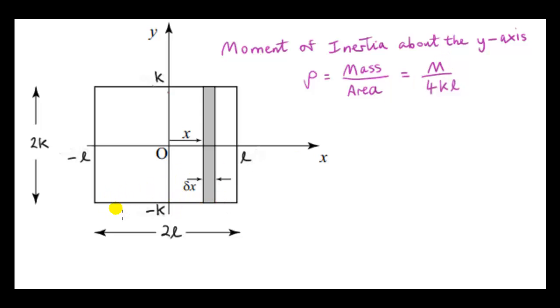To simplify the algebra a bit, I'm calling one side of this rectangle 2L and the other side 2K. Of course, I could have just said this is L and this is K. Then this point here would be L over 2 and this point here would be minus L over 2.